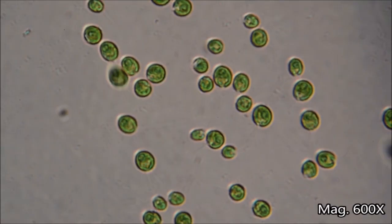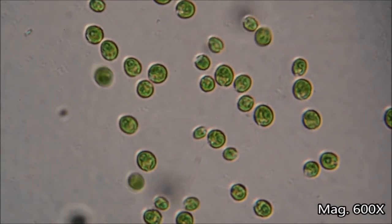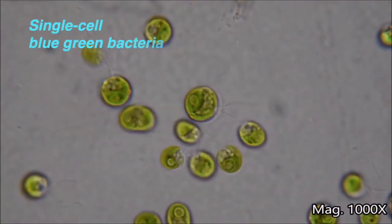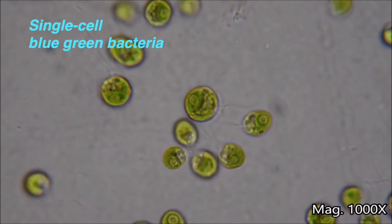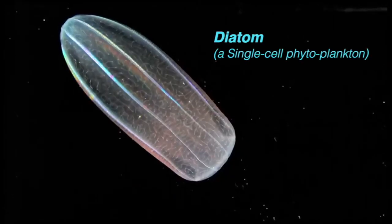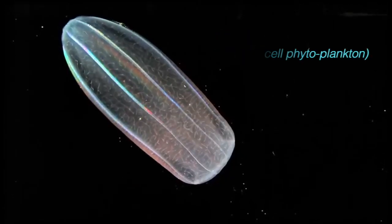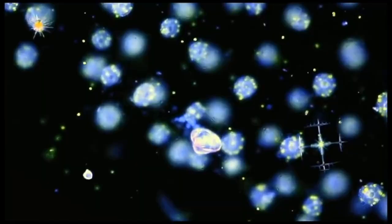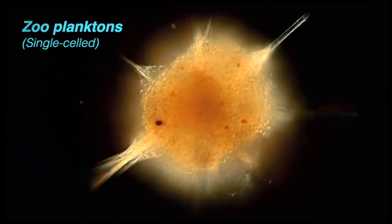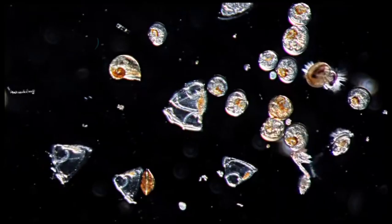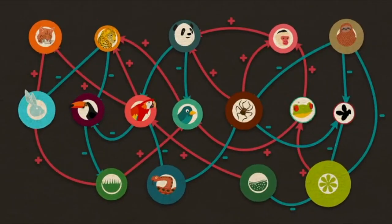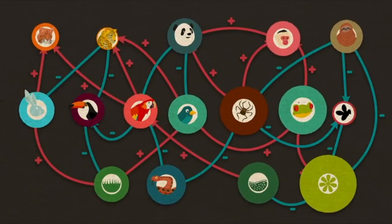DNA makes atoms into a cell. The simplest life forms have one cell. Blue-green bacteria is one type. Some zooplankton are single-celled too. Next, life with many cells.